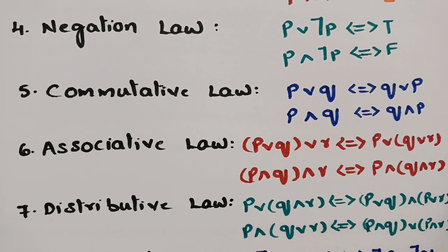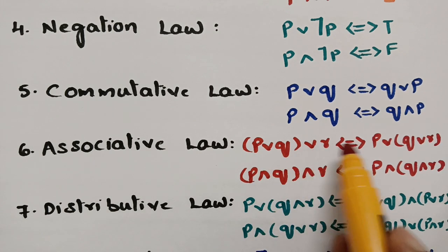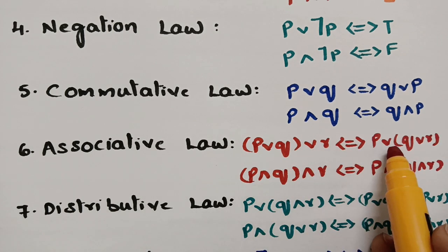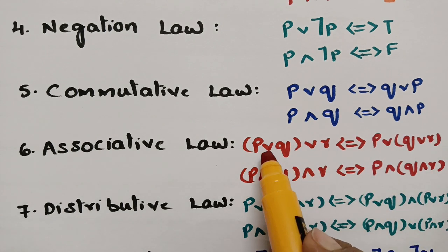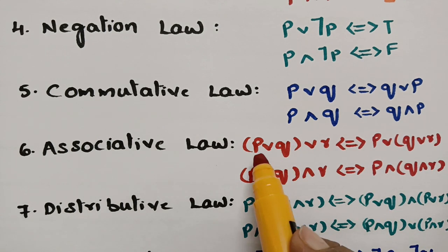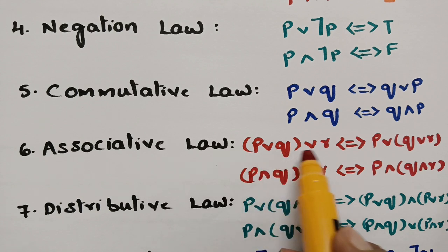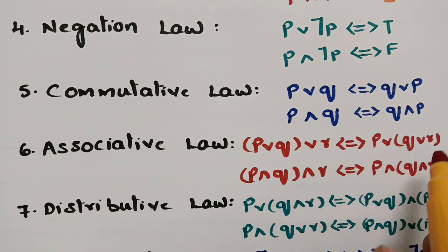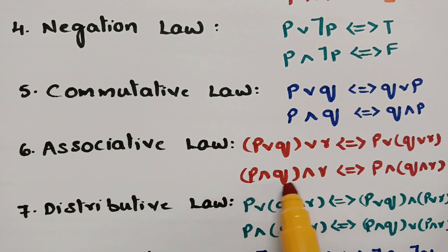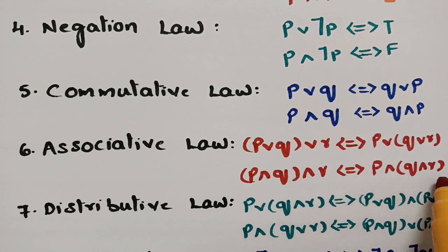Comparing to the associative law, we take three propositions, like a times (b times c) equals (a times b) times c. So whether you use conjunction or disjunction: p OR (q OR r) equals (p OR q) OR r, and p AND (q AND r) equals (p AND q) AND r.